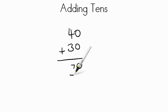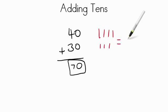For a total or sum of seventy. What this really means is if we drew it by ten sticks, one, two, three, four tens, plus one, two, three tens, we count those all up. That's the same as seven tens, and seven tens is the same as seventy.